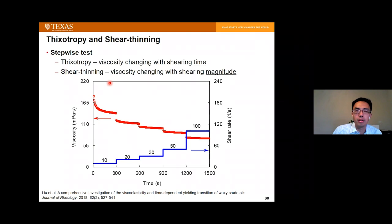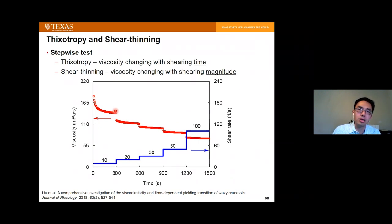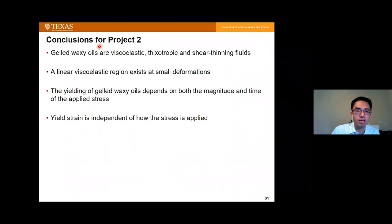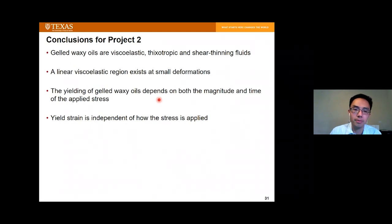To conclude the second project, this work studied the rheological behavior of gelled waxy oil, including viscoelasticity, thixotropy, and shear thinning. We found a linear viscoelastic region at small deformation, and that although the yielding of gelled waxy oil depends on both the magnitude and duration of the applied stress, the yield strain is almost independent of how the stress is applied.